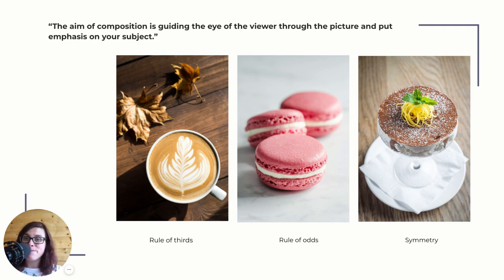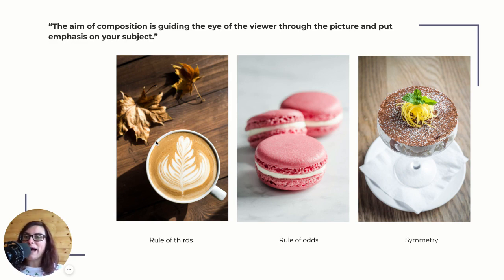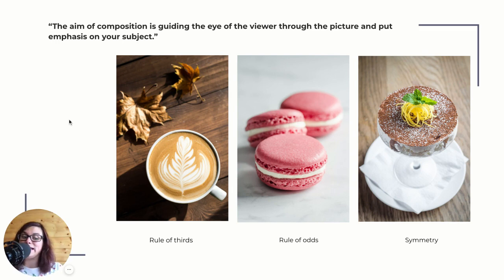What is composition? The aim of composition is guiding the eye of the viewer through the picture and putting emphasis on your subject. Here I have three visual examples of three of the most used and easiest-to-use rules of composition: the rule of thirds, the rule of odds, and symmetry. You can see how these images are well balanced — you immediately understand what your subject is and your eye is immediately drawn to it. How do we make this happen? Let's see.